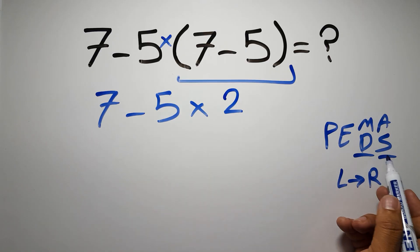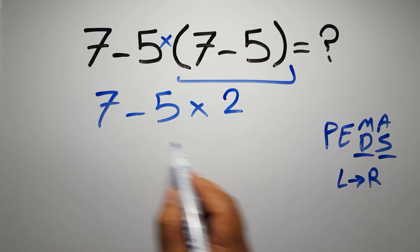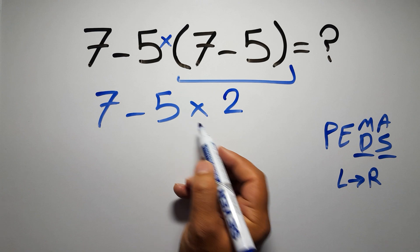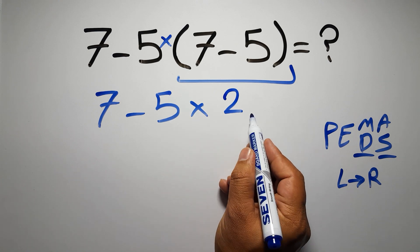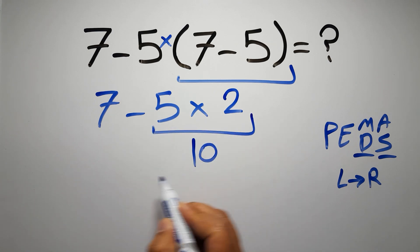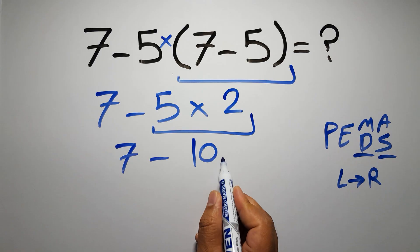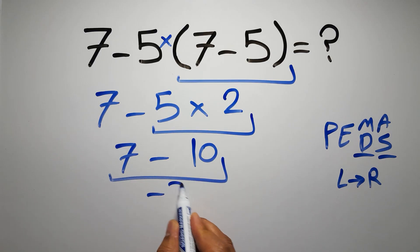because in PEMDAS multiplication comes before subtraction, so here first we have to do this multiplication, 5 times 2 gives us 10, so 7 minus 10, which equals negative 3,